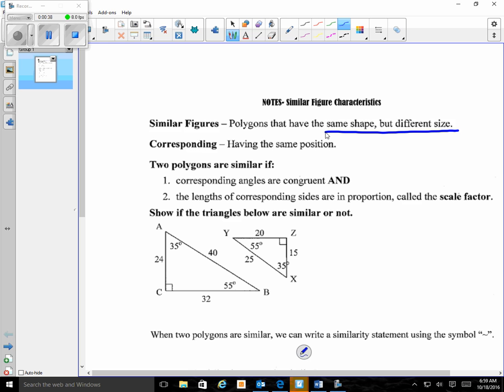Two polygons are similar if - you might want to get out a highlighter. I'm going to start highlighting some things just to kind of help them stand out and we're going to continue to use our highlighters as we go throughout our similar figure study. So make sure you always want to have two color highlighters with you.